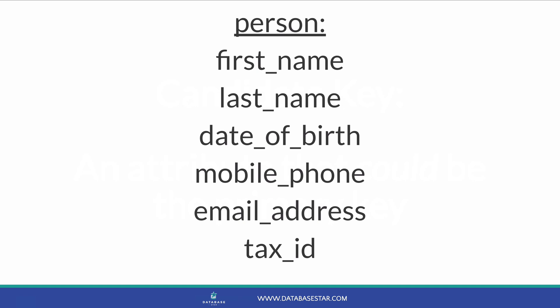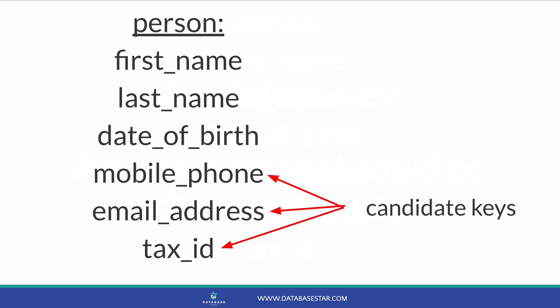How does this relate to a candidate key? A candidate key is any of those fields that could be the primary key — or any field that can be used to uniquely identify the record. There is usually one of these in a table and often more than one. Looking at these fields, which ones could be a candidate key? The tax ID could be a candidate key. It's most likely unique to a person, but it depends on how the country generates and uses them. So for now it's a candidate key.